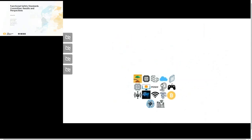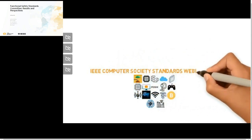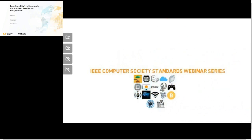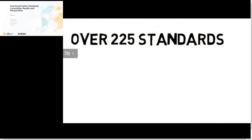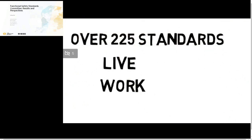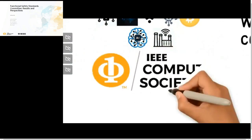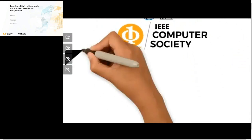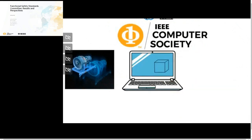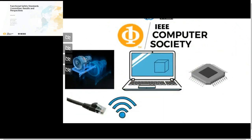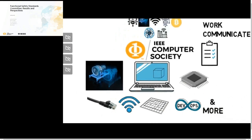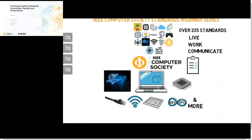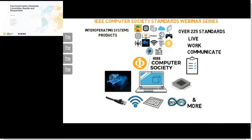Thank you for joining us for the IEEE Computer Society Standards webinar series brought to you by the Standards Activities Board. With over 225 standards that transform the way we live, work, and communicate, the IEEE Computer Society sets the standard for design automation, simulation, testing technologies, Ethernet and Wi-Fi, quality assurance processes, systems architecture, DevOps, and more. Standards deliver best practice processes for developing market-ready interoperating systems, products, and services.